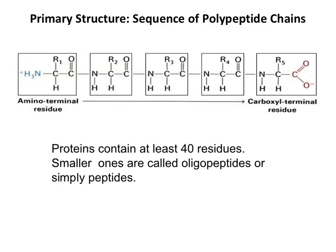For a polypeptide to be considered a protein, it needs to have at least 40 residues. Smaller ones are called peptides or oligopeptides. 40 amino acids seems to be the number appropriate for a polypeptide to fold on a stable shape to carry out a function.